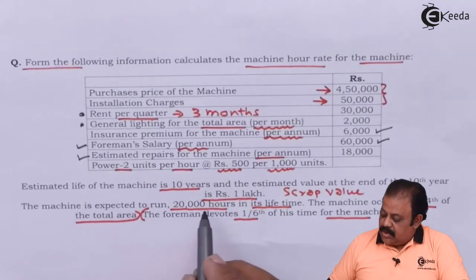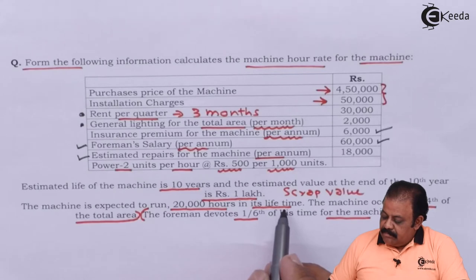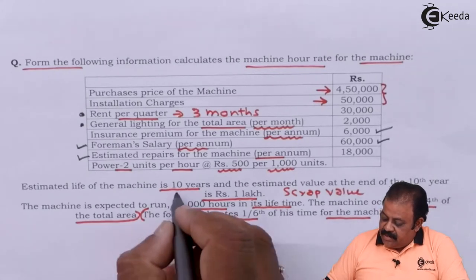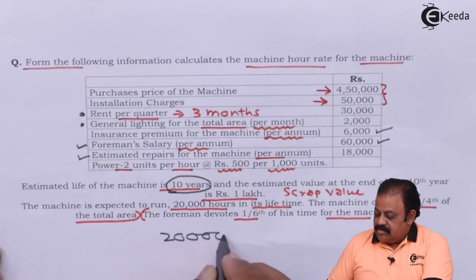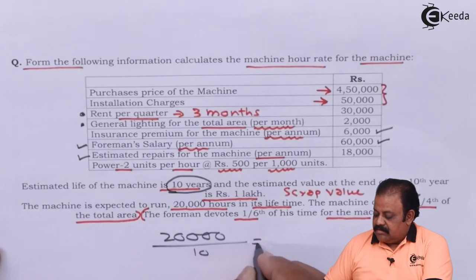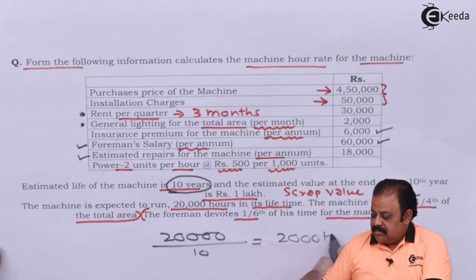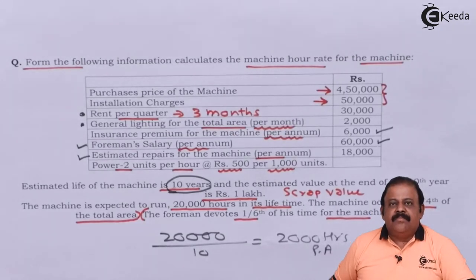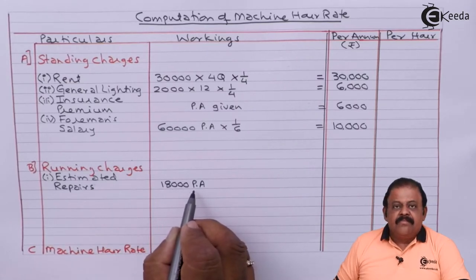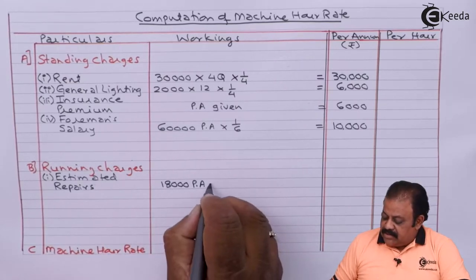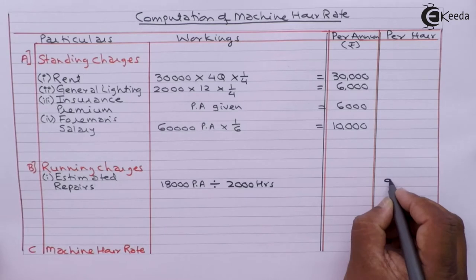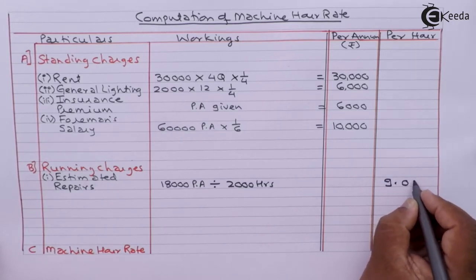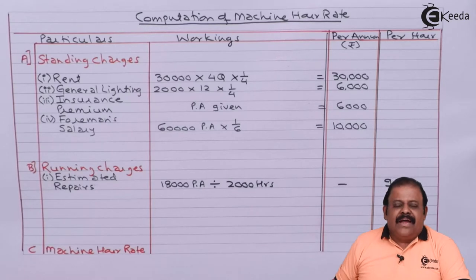The machine is expected to run 20,000 hours in its lifetime and the lifetime is 10 years, so 20,000 hours divided by 10 years gives 2,000 hours per annum. Estimated repairs are 18,000 per annum; to get the per hour rate we divide by 2,000 hours, giving rupees 9 per hour.